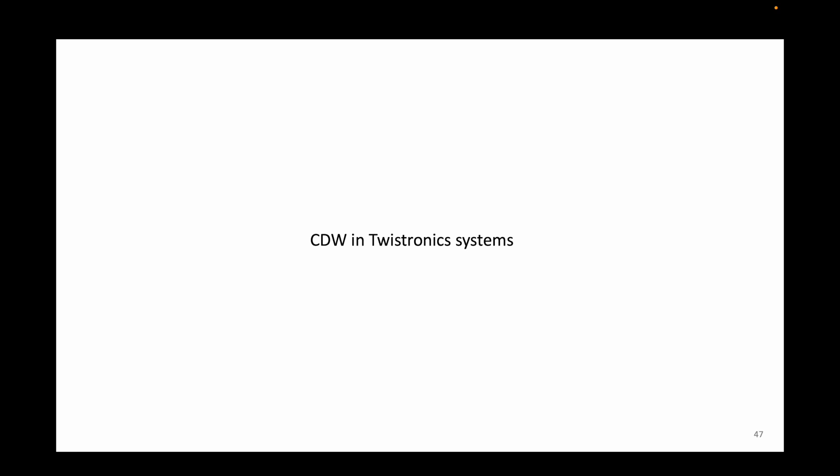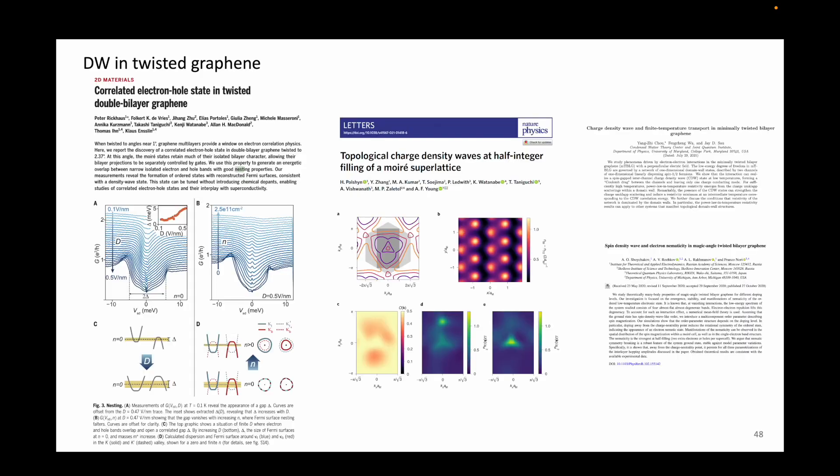In recent years, there have been reports of charge density waves in twisted structures of 2D materials, especially in twisted graphene systems.